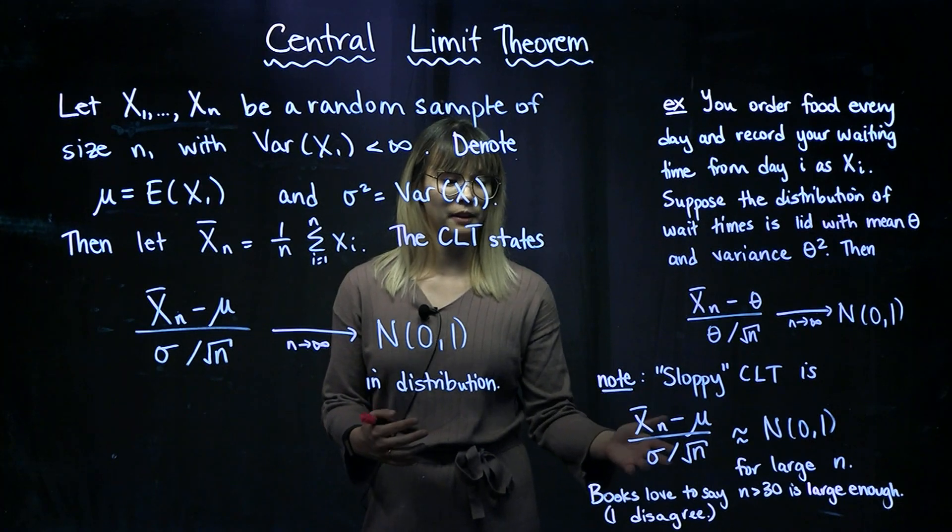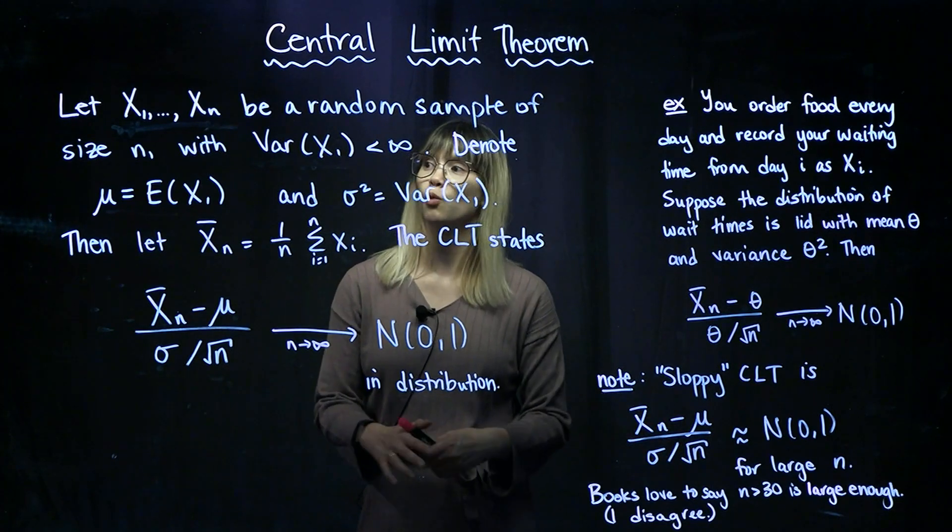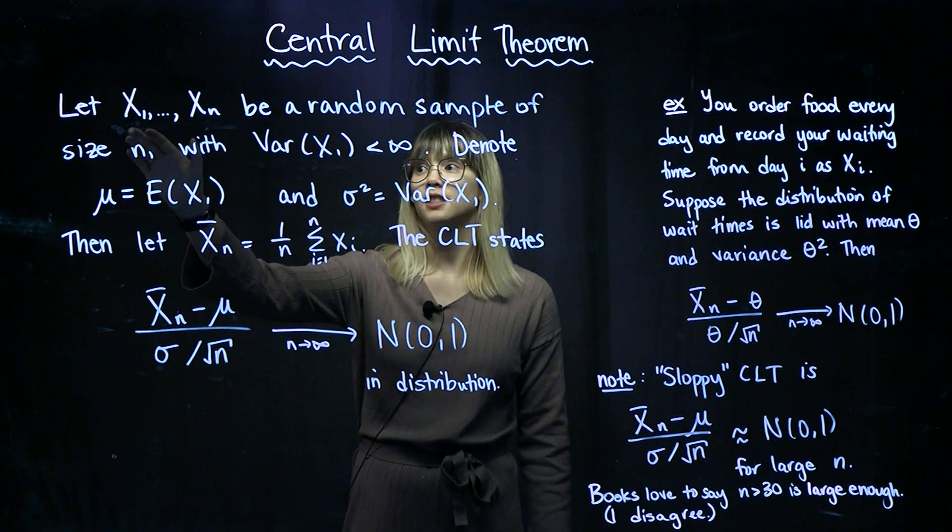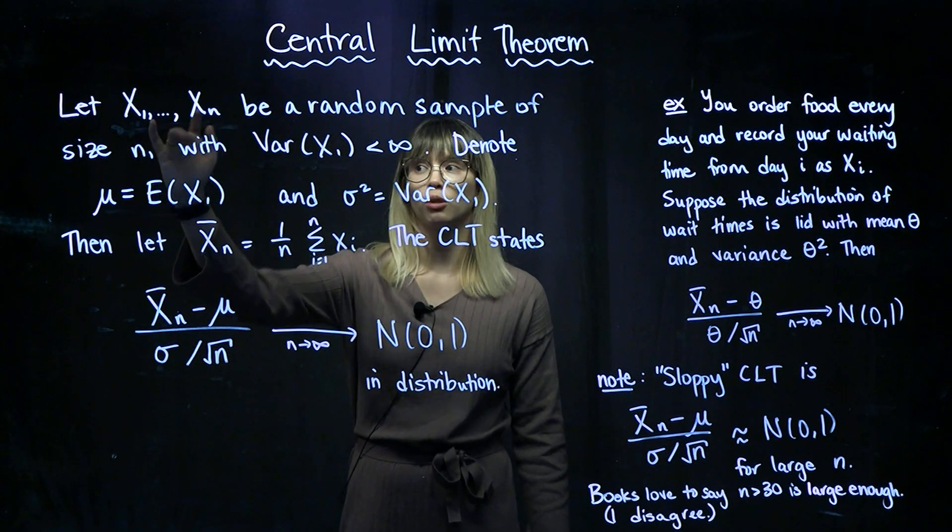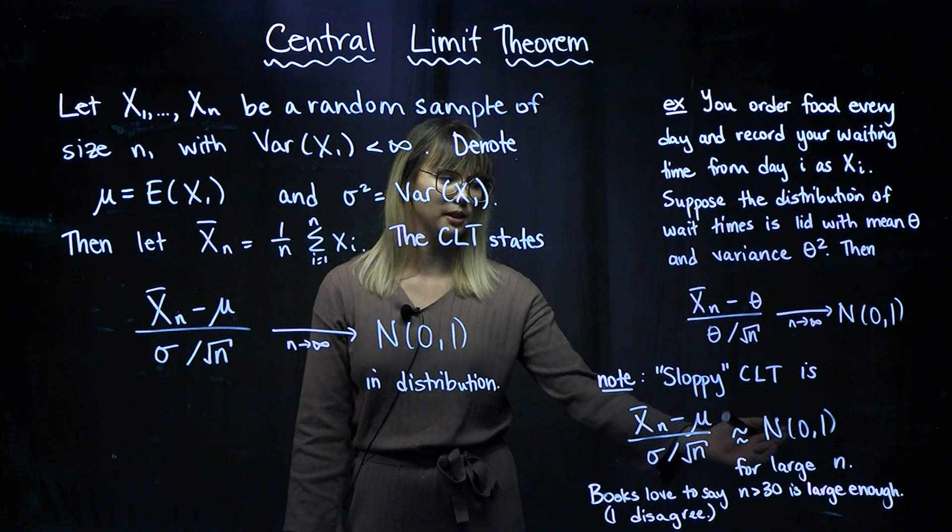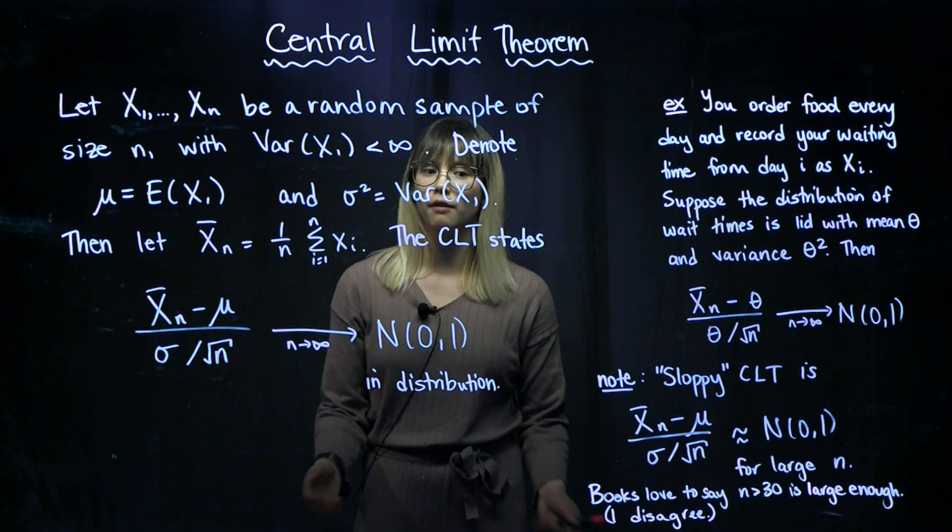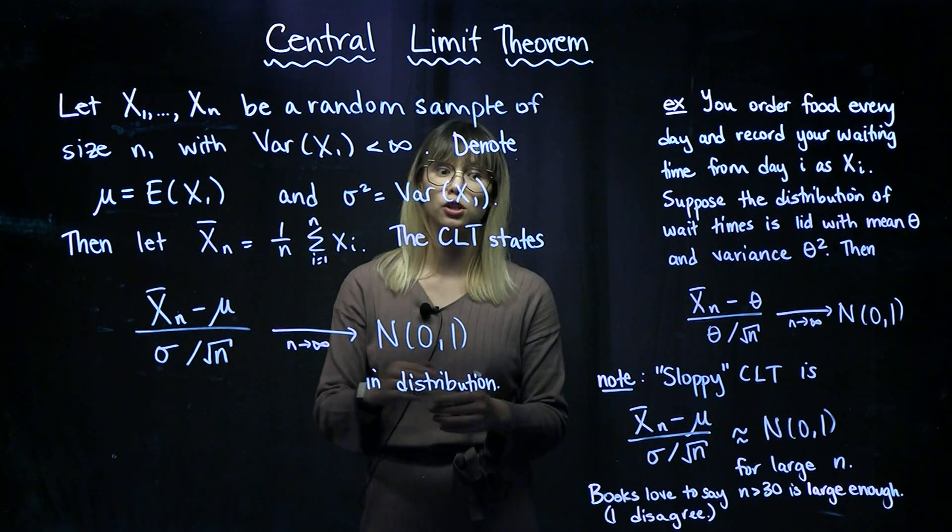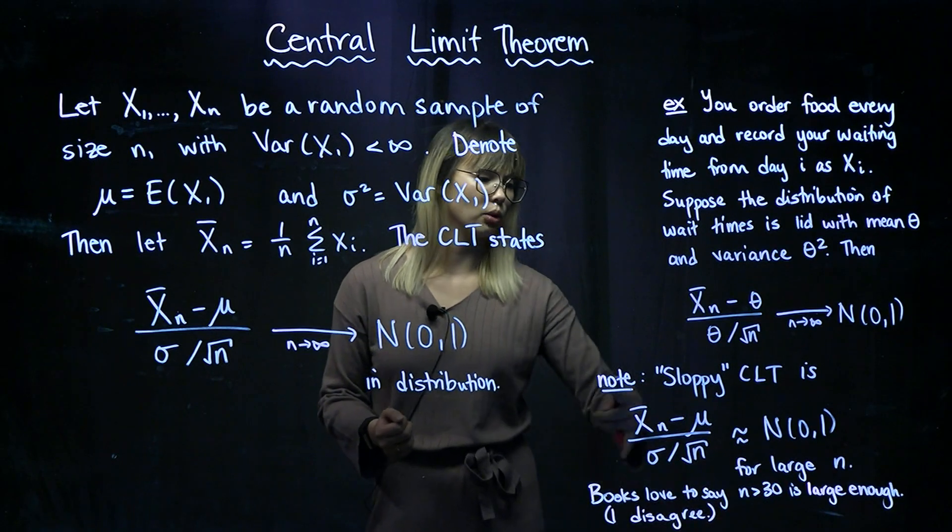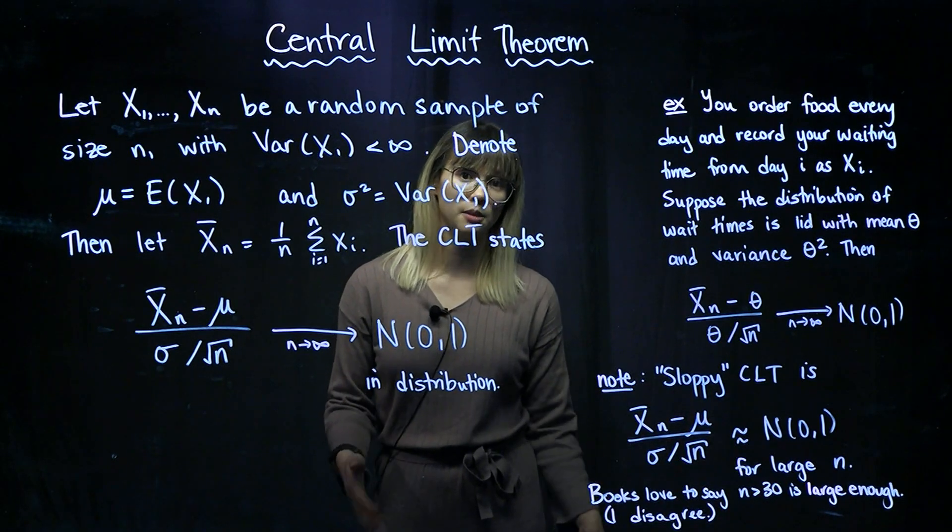I think that it definitely varies based on what the distribution of the x's looks like. If we have x's that have a normal distribution already, then of course this sloppy CLT is going to be very good. If we have a distribution that's very skewed, then it's going to take a sample size much larger than 30 in order for this sloppy CLT to be any good.